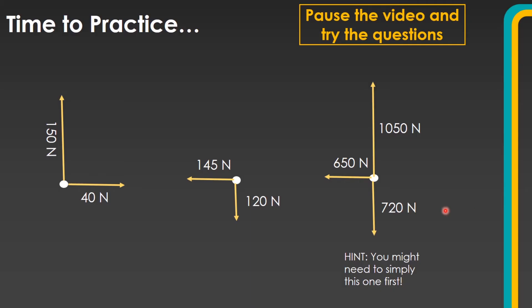Hopefully you've had enough time to have a go at those examples. What we've just done is taken two forces to work out the overall resultant force. What we're going to do now is kind of go backwards — take the overall resultant force and try to split it back into two component parts.